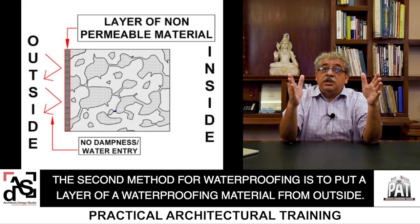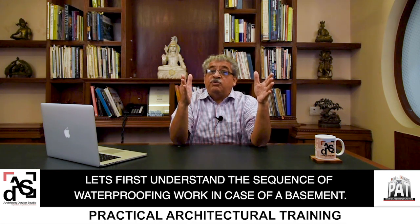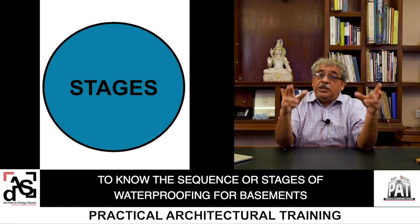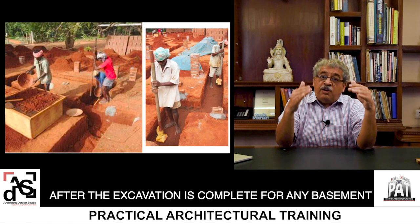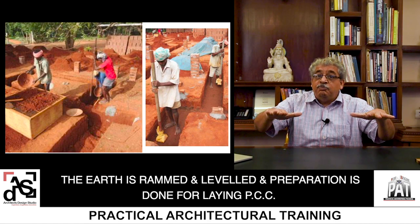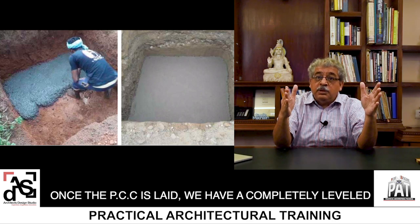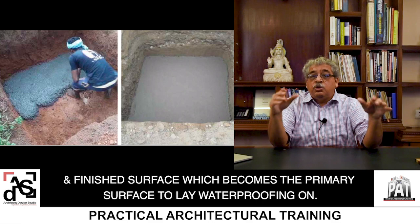The second method for waterproofing is to put a layer of waterproofing material from outside. Let us first understand the sequence of waterproofing work in the case of a basement. It is very important to know the sequence or stages of waterproofing for basements before studying the materials used. After excavation is complete, the earth is rammed and leveled, and preparation is done for laying the PCC. Once the PCC is laid, we have a completely leveled and finished surface which becomes the primary surface to lay waterproofing on.